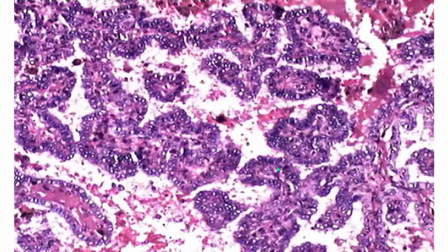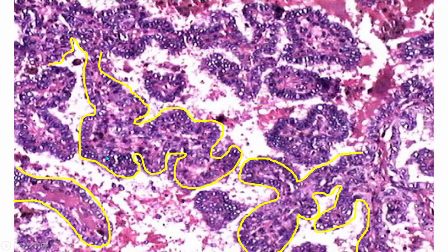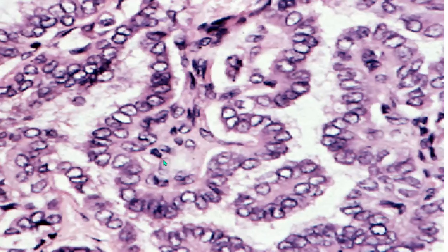Moving on to the microscopy. Papillary carcinoma is a tumor composed predominantly of finger-like projections known as papillae. Each of these papillae has a distinct fibrovascular core — that is when we call it a true papillae. Remember, the diagnostic feature of papillary carcinoma is not by the presence of papillae, but by the presence of specific nuclear features.